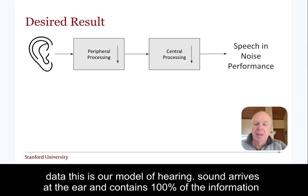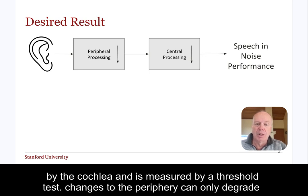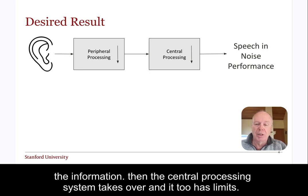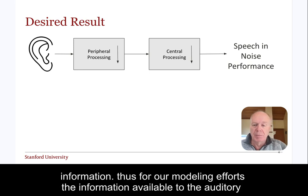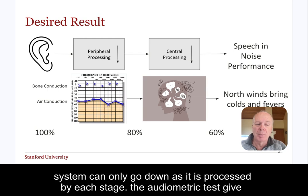This is our model of hearing. Sound arrives at the ear and contains 100% of the information that is available to a listener. There is processing on the periphery, such as done by the cochlea, and it is measured by a threshold test. Changes to the periphery can only degrade the information. Then the central processing system takes over, and it too has limits — most importantly, it can only degrade the speech information. For our modeling efforts, the information available to the auditory system can only go down as it is processed by each stage.